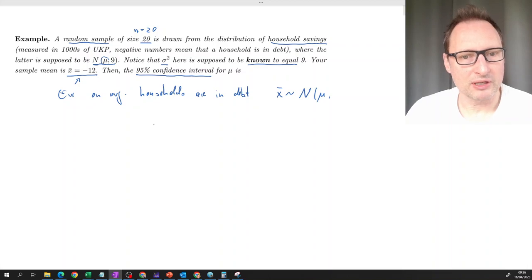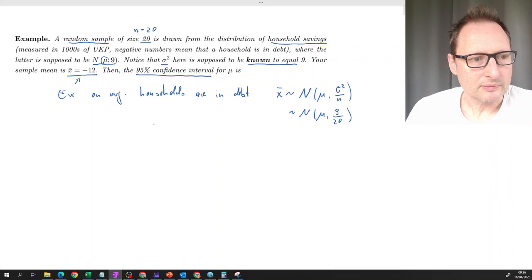And variance, the variance for X bar is going to be the variance of X divided by N. So in our case, that would be a normal distribution with mu and we have nine variance and N is 20. So that would be our variance. So to then calculate the confidence interval, that will be centered around our sample mean.